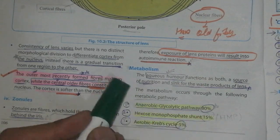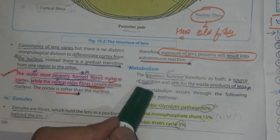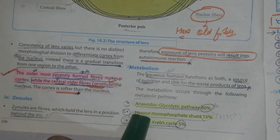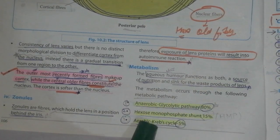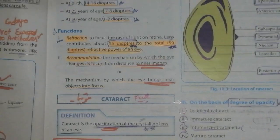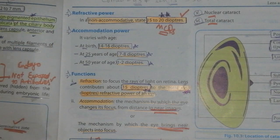Now metabolism: the aqueous humor functions as both the source of nutrition and sink for the waste products of the lens. Anaerobic glycolytic pathway, hexose monophosphate, aerobic cycle.